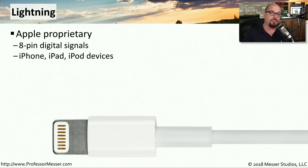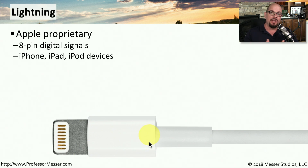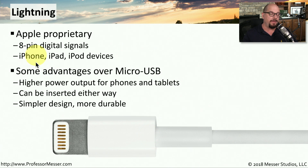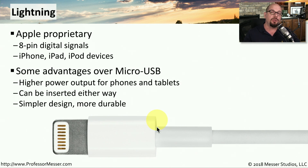Many Apple mobile devices use a proprietary standard connection called a lightning connector. This is an eight-pin connector, and you commonly see this on iPhones and iPads. There are some advantages to using this lightning connector over a micro USB connector. One of those is you can output more power through a lightning connector, which means you could possibly recharge your iPhone or iPad faster than using a traditional micro USB connection. These can also be plugged in either way to your mobile device — there is no top or bottom, so it doesn't matter which side you're plugging it in.